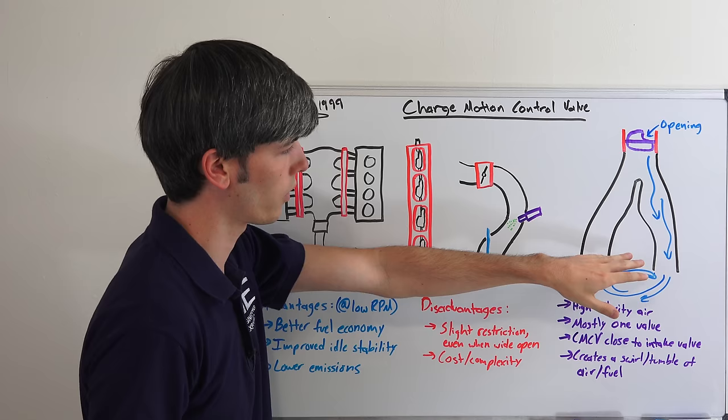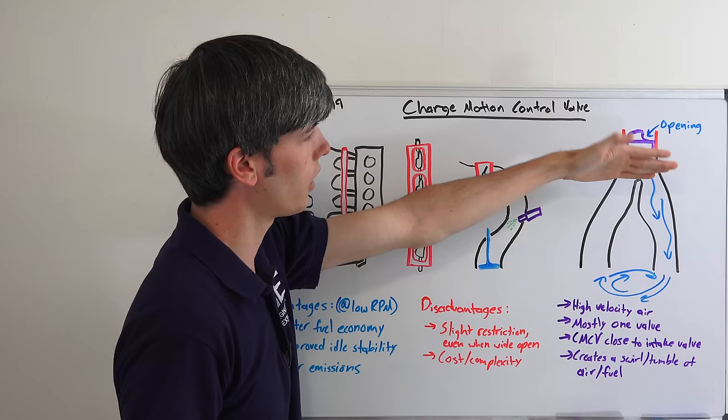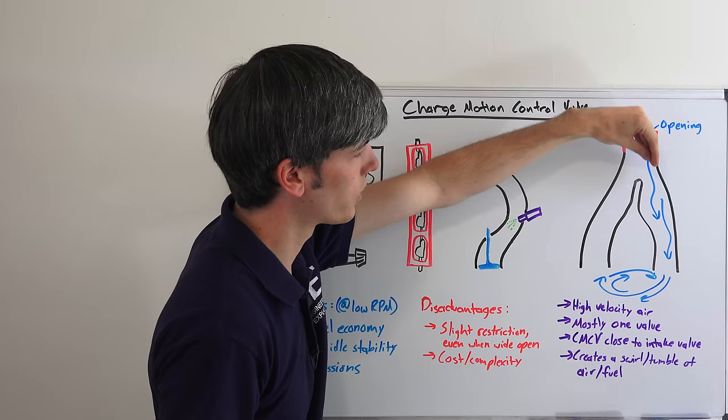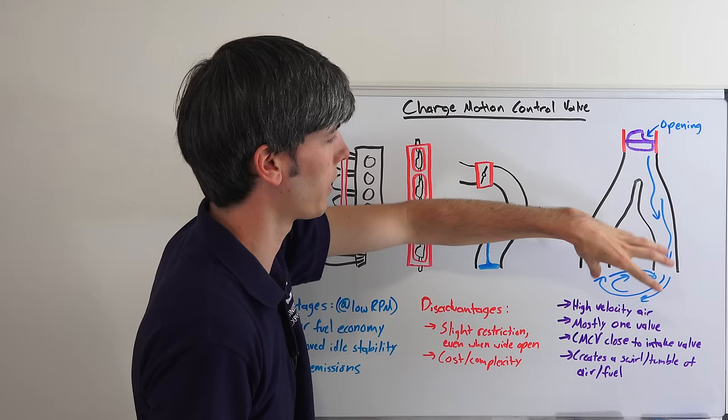And here we have an opening, and so as you can see this valve will open and close depending on what rpm you're at, what throttle position you're at. And so as you close this fully you can see there's just a small opening there, so most of that air is going to flow into this intake valve rather than both of them. Now of course some air will go through both of them, and they will both open, but most of the air will flow through here.